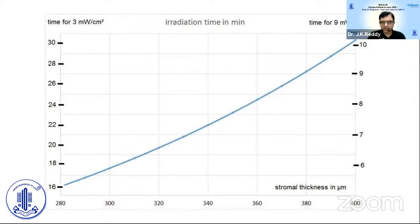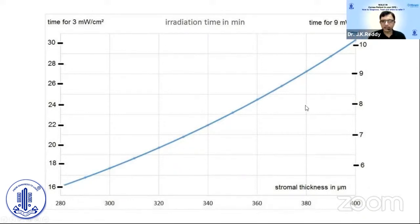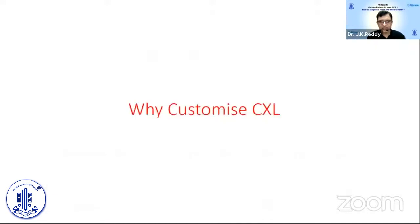Seiler actually provided a graph showing that, for example, if you are using 3 milliwatts or 9 milliwatts, what energy is necessary for each corneal thickness. He developed this almost 10 to 15 years back based on physical calculations. He is a scientist, not an ophthalmologist.